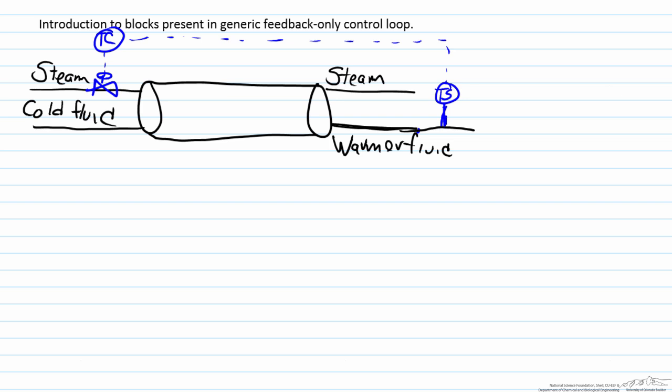In this screencast we will analyze each of the individual blocks that are present in a generic feedback only control loop.